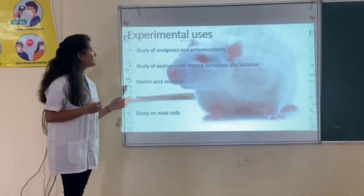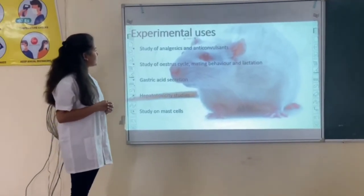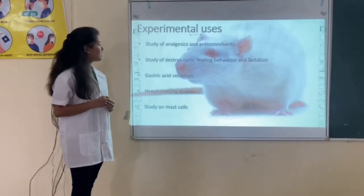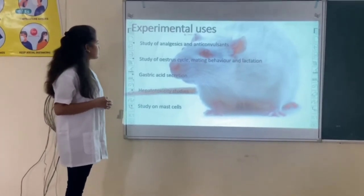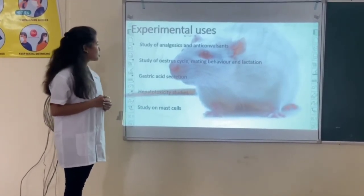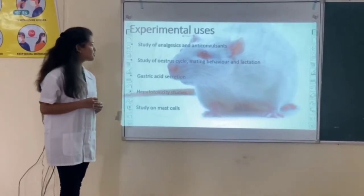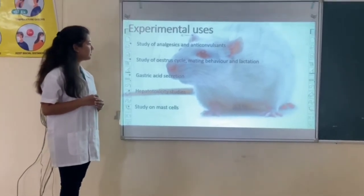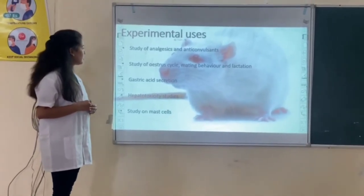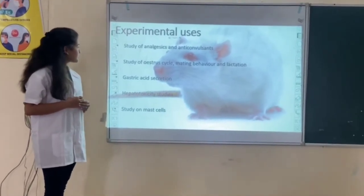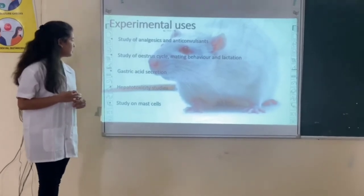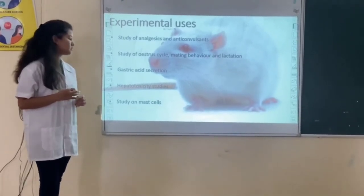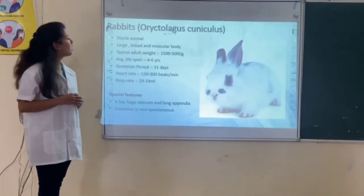Experimental uses of rat: it is used for the study of analgesics and anti-convulsants. It is also used for the study of gastric secretion, eating behavior and implantation, gastric acid secretion, hepatotoxicity studies, and the study of mast cells.